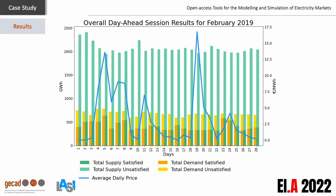Finally, this chart presents the overall market results for each day of February 2019, from the market operator's perspective. Analyzing this chart, one can see the aggregated demand and supply for each day of the month regarding the satisfied and unsatisfied energy. In this case, the blue line represents the average market price for each day. This chart shows that the amount of supply is significantly higher than the demand. However, not all demand was satisfied due to the bid prices set by the players. It is also interesting to observe the average market price variation along the month. The highest average price was set on 19 February at 16.76€ per MWh, while the lowest was on the first day of the month at zero.